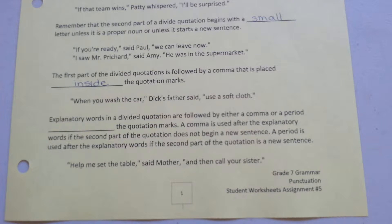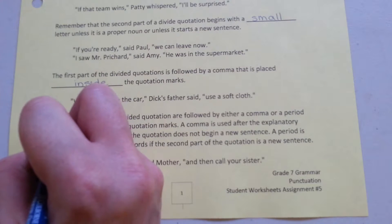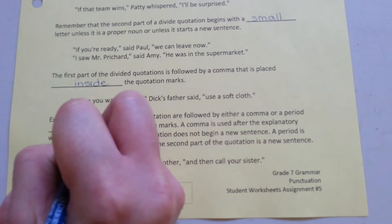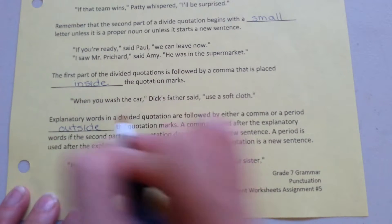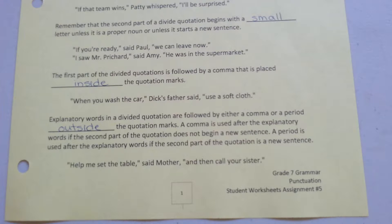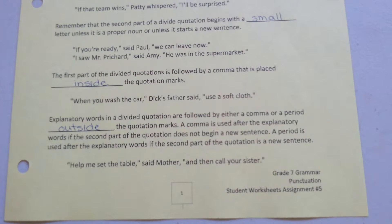Explanatory words in a divided quotation are followed either by a comma or a period outside the quotation marks. A comma is used after the explanatory words if the second part of the quotation does not begin a new sentence. A period is used after the explanatory words if the second part of the quotation is a new sentence.